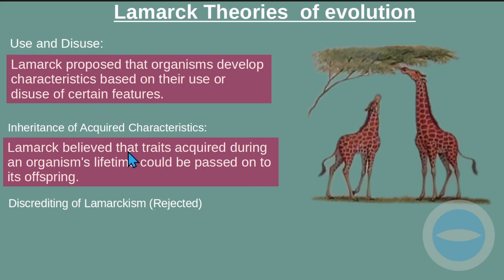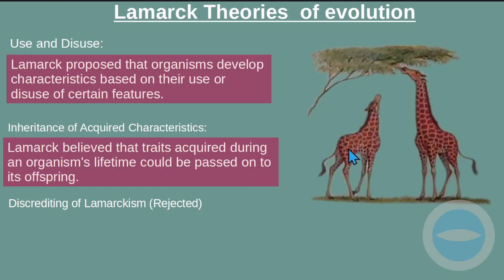Lamarck believed that traits acquired during an organism's lifetime could be passed on to its offspring. So if this giraffe managed to grow its neck because the environment no longer favored short-necked giraffes, this long neck would then be passed to the offspring. If you acquire something while you are alive, when you have offspring, they will have those characteristics. For example, if you build muscle at the gym, your kids would inherit those muscles — that is what he claimed.